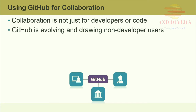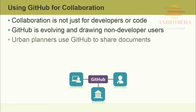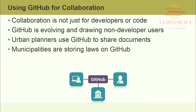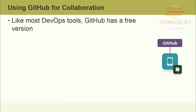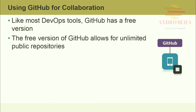GitHub is evolving and drawing non-developer users. Urban planners use GitHub to share documents such as historical maps and engineering surveys. Municipalities are storing laws on GitHub. Architects and engineers use GitHub for document and design collaboration. GitHub has become the Library of Congress for code and document repositories. Like most DevOps tools, GitHub has a free version, which allows for an unlimited number of public repositories.